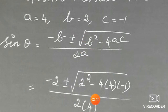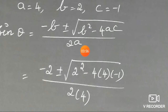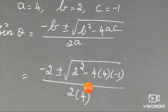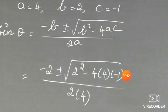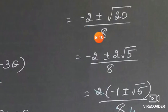Substituting into the quadratic formula: sin θ = (−2 ± √(2² − 4 × 4 × (−1))) / (2 × 4) = (−2 ± √(4 + 16)) / 8 = (−2 ± √20) / 8. Since √20 = 2√5, we have (−2 ± 2√5) / 8.